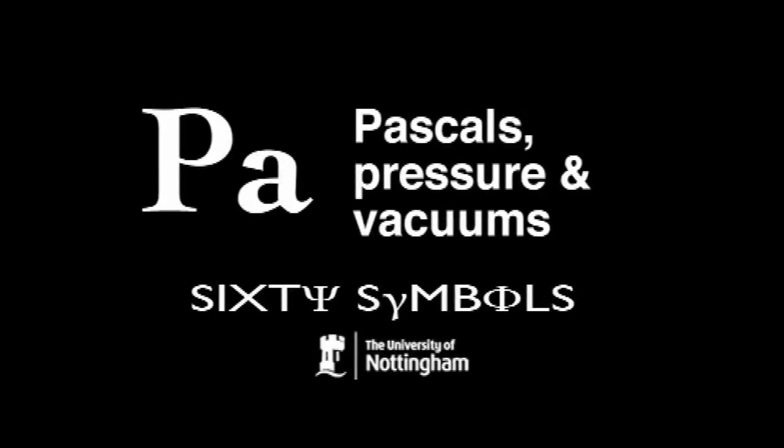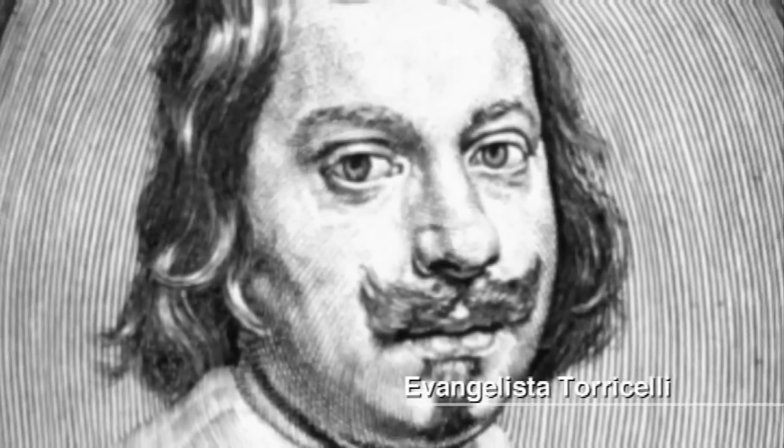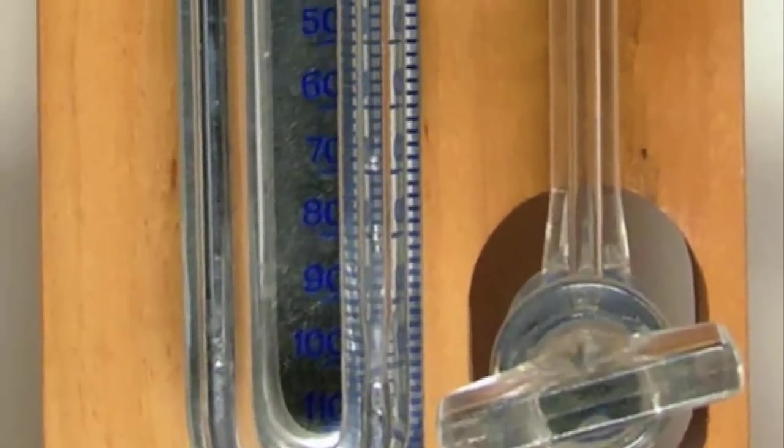The unit we use for pressure, well we use a range of units. One of the interesting ones is Torr which stems from Torricelli. Torricelli was the first person to build a barometer. 760 Torr is the atmospheric pressure and that stems from the height of a column of mercury that atmospheric pressure can sustain.